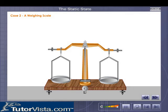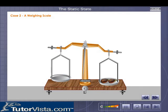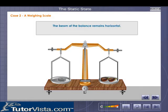Case 2: A Weighing Scale. Now let us consider another case. If an object is kept on one pan of the balance and it is balanced by adding weights on the other pan, the beam of the balance remains horizontal. This is a static state where two opposite forces are balanced.